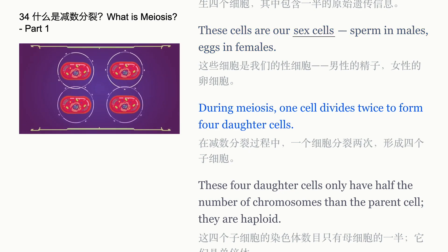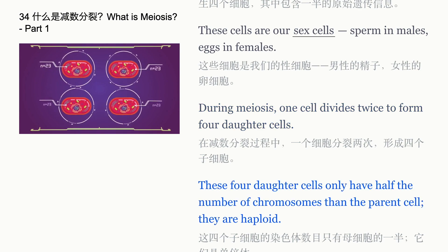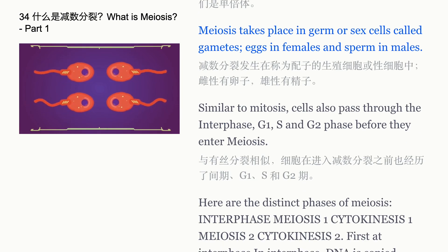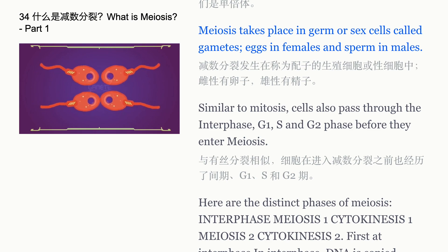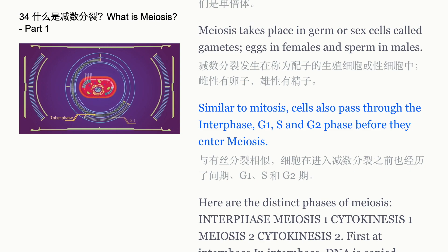During meiosis, one cell divides twice to form four daughter cells. These four daughter cells only have half the number of chromosomes of the parent cell — they are haploid. Meiosis takes place in germ or sex cells called gametes: eggs in females and sperm in males. Similar to mitosis, cells also pass through the interphase G1, S, and G2 phases before they enter meiosis.